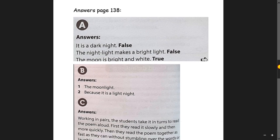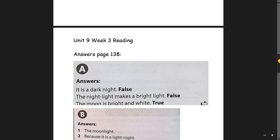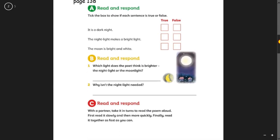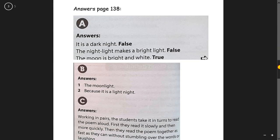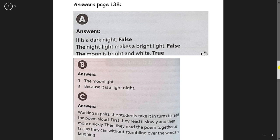The moonlight is brighter. And no need for the night light because... Sorry. The second one was why isn't the night light needed? Yeah. Because it's a light night. And then here is explaining that you should read it slowly and then faster.